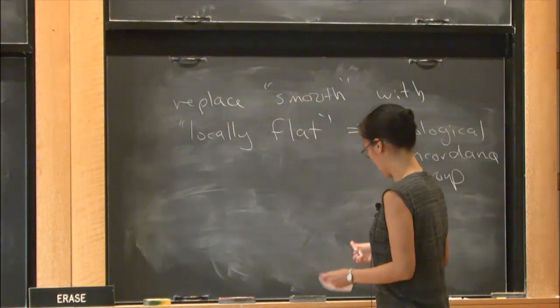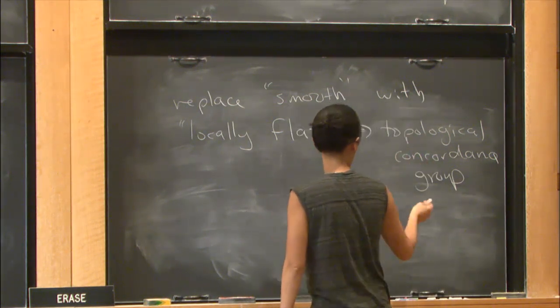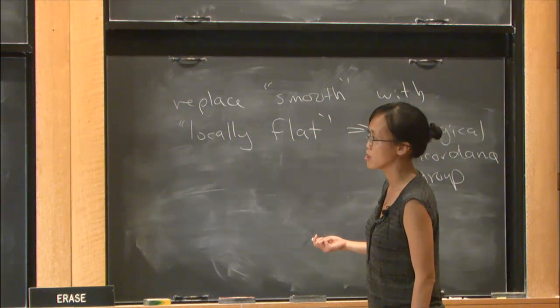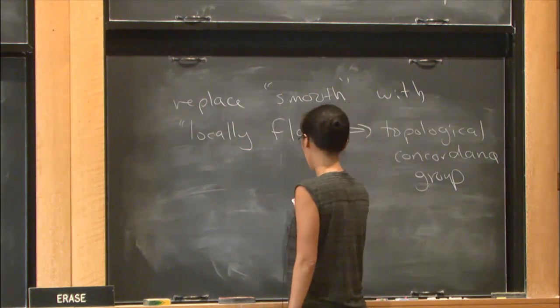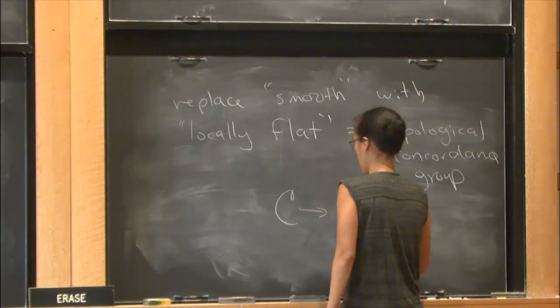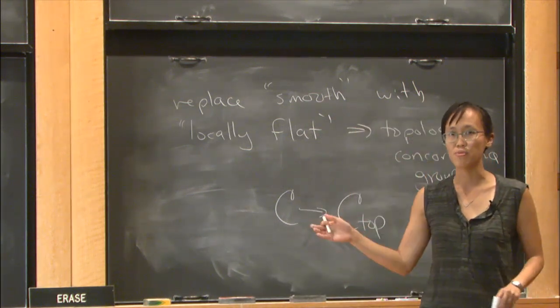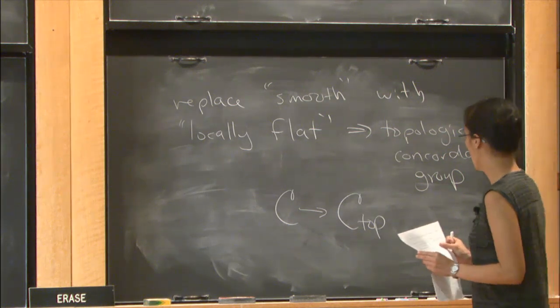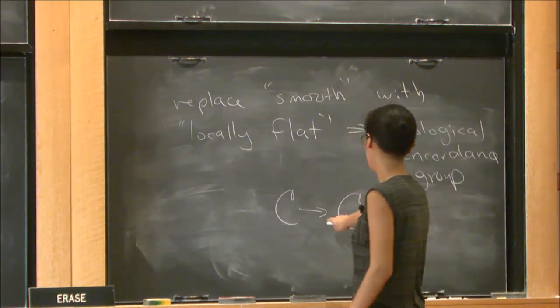Which we'll denote C_top. There's an obvious homomorphism from the smooth concordance group to the topological concordance group. You have your smooth cylinder; you can just forget the smooth structure on it.